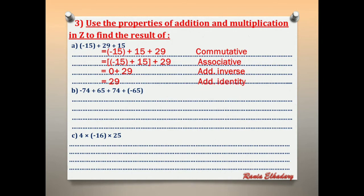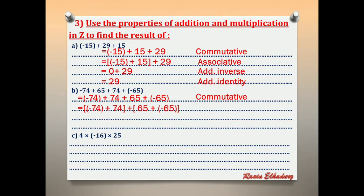Letter B: negative 74 + 65 + 74 + negative 65. Step 1 — commutative: group (negative 74 + 74) and (65 + negative 65). Step 2 — associative: put each pair in brackets. Step 3 — additive inverse: negative 74 + 74 = 0 and 65 + (−65) = 0. Step 4 — additive identity: 0 + 0 = 0.